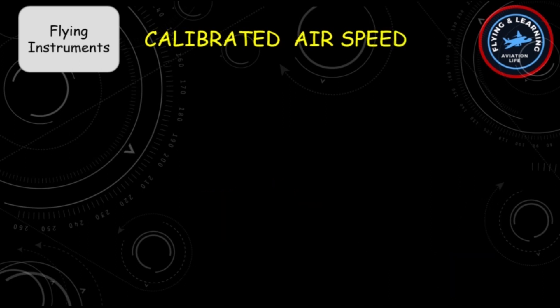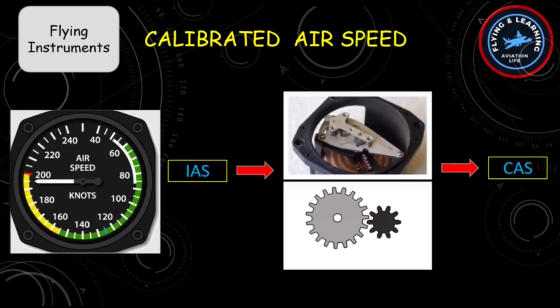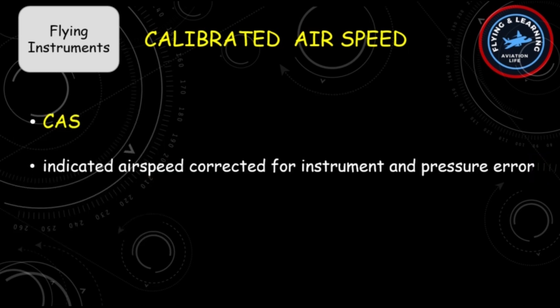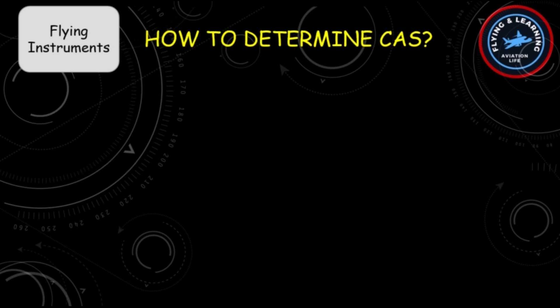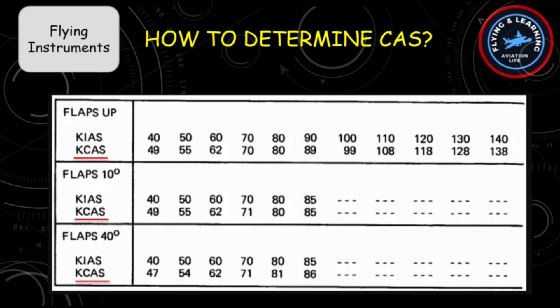If we correct these two errors with proper calibration of the instrument, we get the second type of airspeed: Calibrated Airspeed. By definition, calibrated airspeed is the indicated airspeed corrected for instrument and pressure error. To determine calibrated airspeed, a calibration table is given in the aircraft manual by the manufacturer, based on different configurations and IAS.